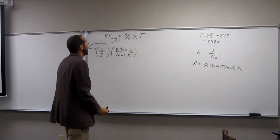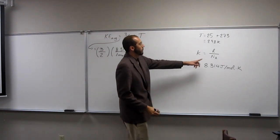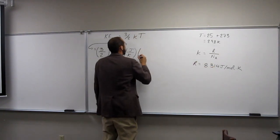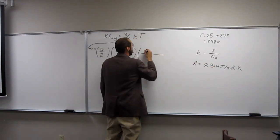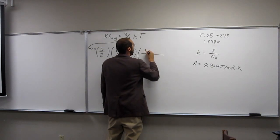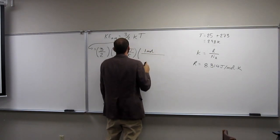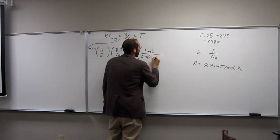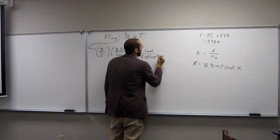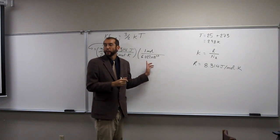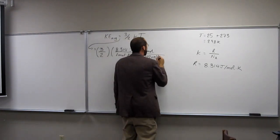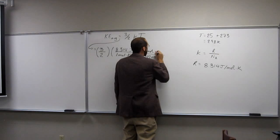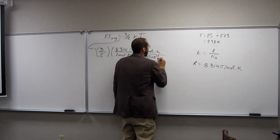times one over nA. So in that case, one mole is 6.022 times 10 to the 23rd. And if you want to think about it as molecules of hydrogen, you can. So moles of hydrogen, H2 molecules.